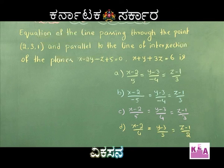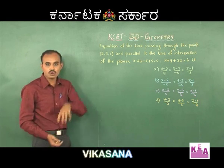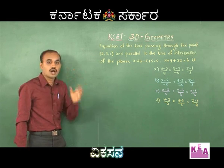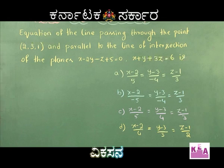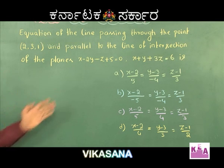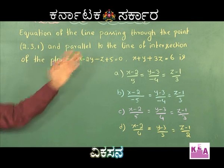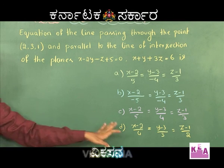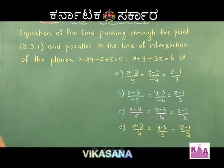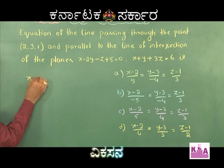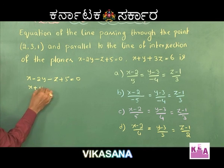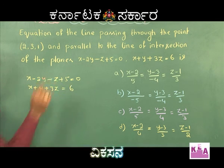We need to calculate the direction ratios of the line of intersection. The line passes through (2, 3, 1) and through the intersection of the two planes. Observing the options, the numerators are the same in all options — we only need to decide the denominator values. Writing the two equations: x − 2y − z + 5 = 0 and x + y + 3z = 6.